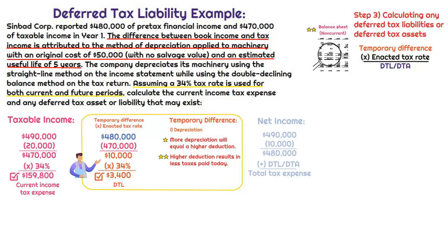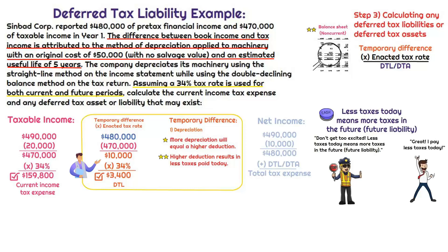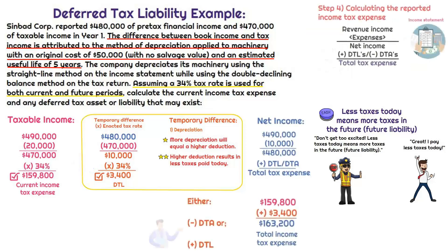Why is this a deferred tax liability? We said that we have a lower taxable income amount than what's reported on the income statement. We have less taxes to pay today, but this doesn't mean it won't eventually get taxed — this is going to get reversed. Eventually this expense will be recognized on the income statement, meaning we'll have less expense to work with for future taxable periods. The IRS is going to get their money, making this an amount owed in the future. So $3,400 represents our deferred tax liability. In step four, the total income tax expense reported in the financial statements is calculated by adding the deferred tax liability to the current income tax expense.